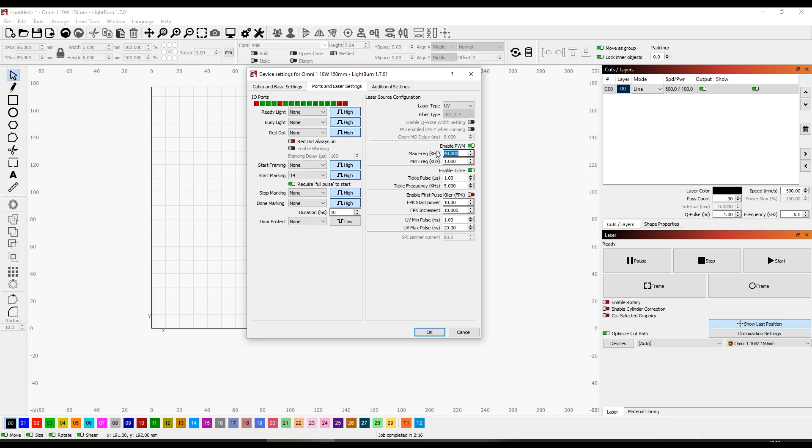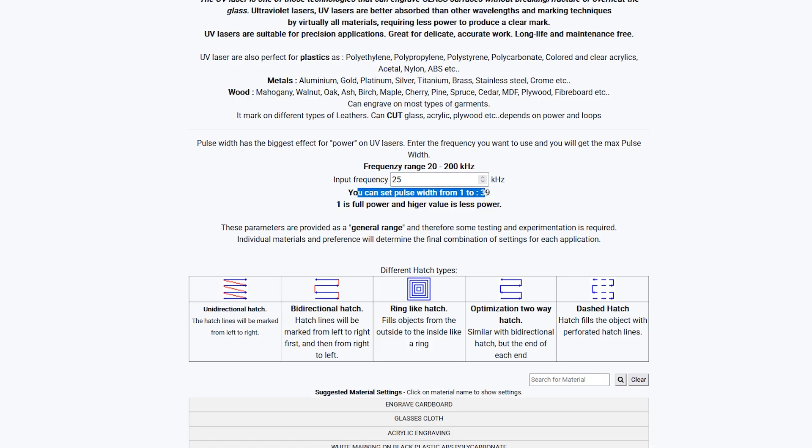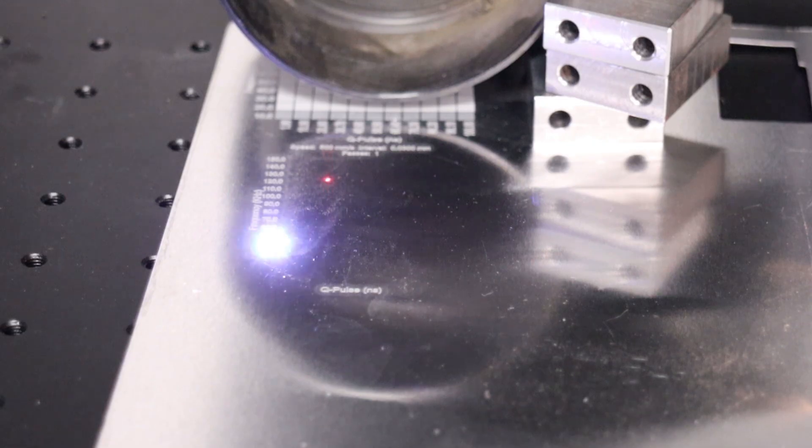First, I adjusted the frequency range of the machine, which, according to the manual, can operate from 20 to 150 kHz. It's important to note that the higher the frequency, the lower the maximum pulse width you can set.